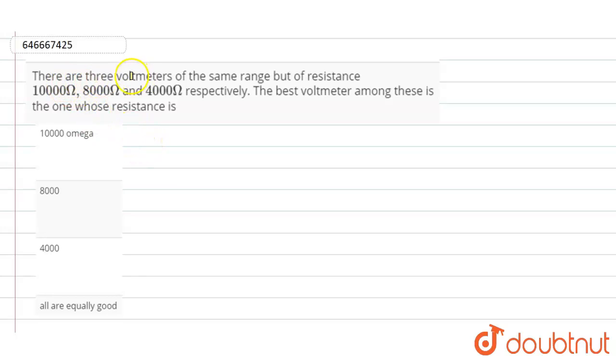It is given that there are three voltmeters of the same range but resistance values are 10,000 ohms, 8,000 ohms, and 4,000 ohms respectively.